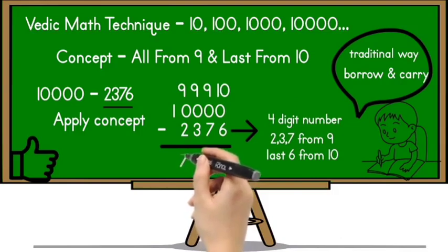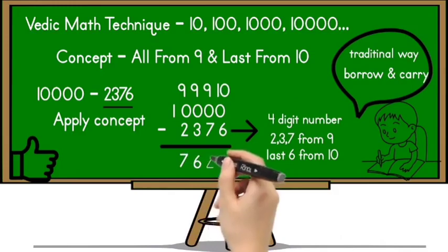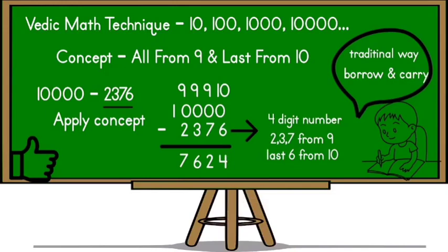So write down 9 above 237 and 10 above 6 and do the normal subtraction here. 9 minus 2 is 7, 9 minus 3 is 6, 9 minus 7 is 2 and 10 minus 6 is 4. So here is your answer, 7624. You can find this answer within few seconds.